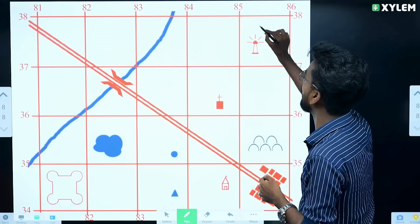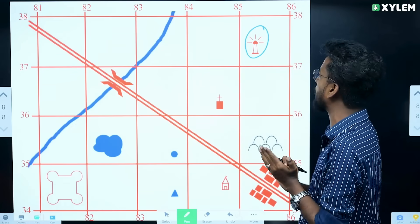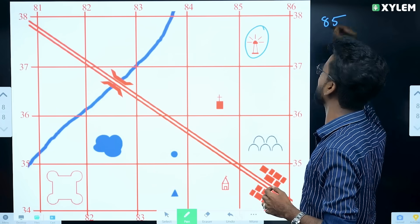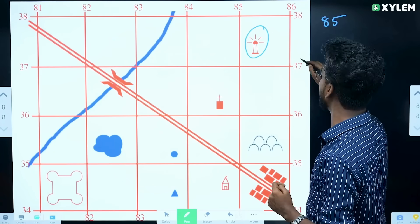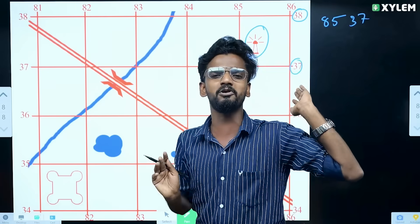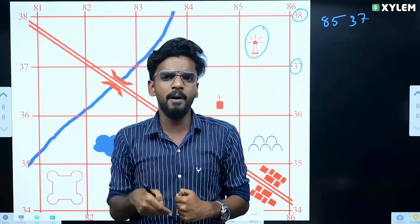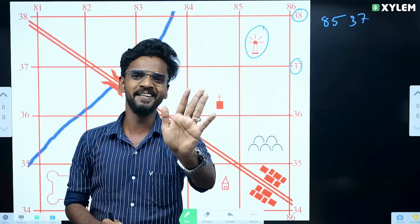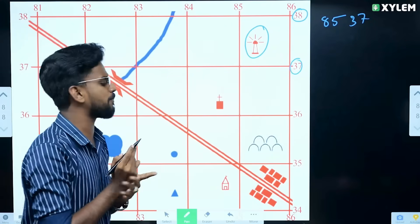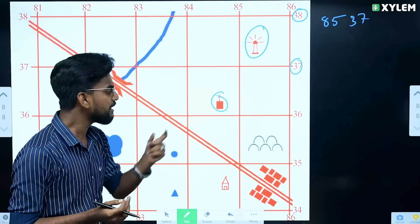Find out the four-figure grid reference of the Lighthouse. This is the Lighthouse. The Easting values are 85 and 86, and the Northing values are 37 and 38. So for the Lighthouse, the four-figure grid reference uses Easting 85 and Northing 37. Now, for the six-figure grid reference of the church or lighthouse, we reached the six-figure reference.